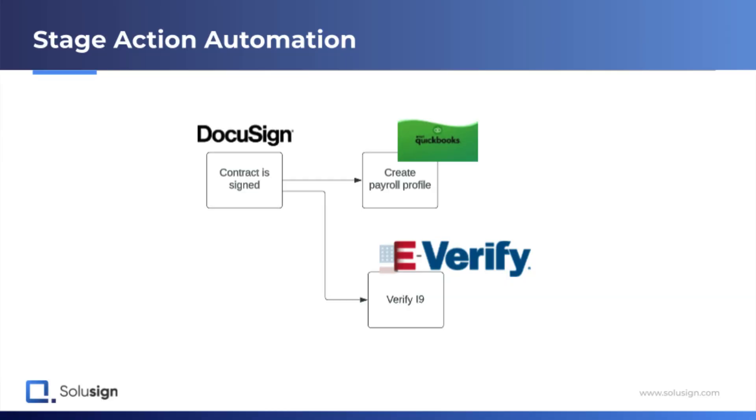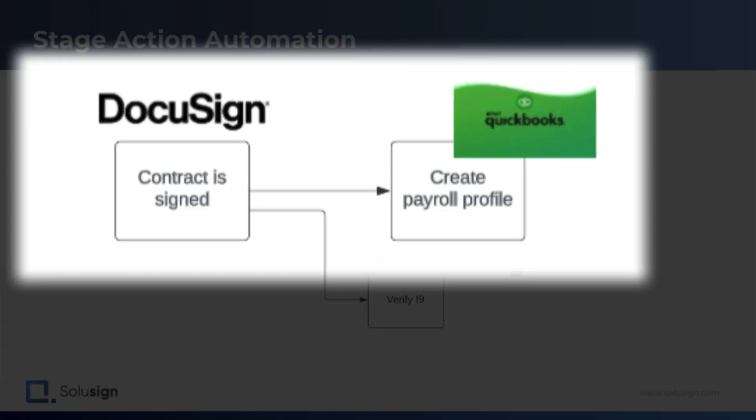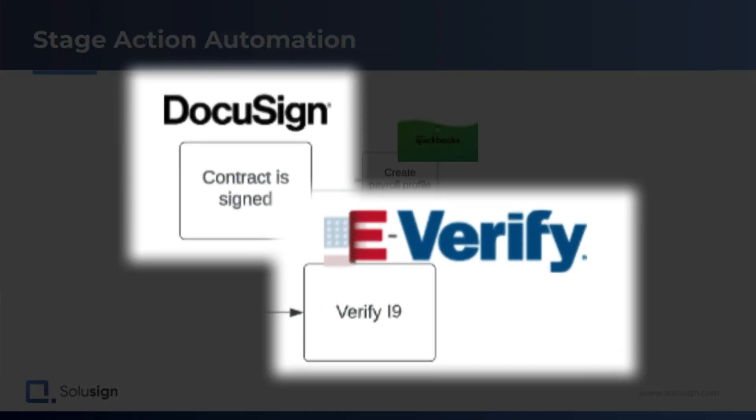When the onboarding paperwork has been signed, another automated rule could send all the banking information entered by the candidate in the forms to QuickBooks or any other payroll system to create the payroll profile. And another rule can take the information entered in the I-9 and upload it inside E-Verify to check whether the candidate has working rights in the United States. With Airtable, all the data you have about your candidates can be reused in other applications that you'd normally need to manually copy-paste information into.